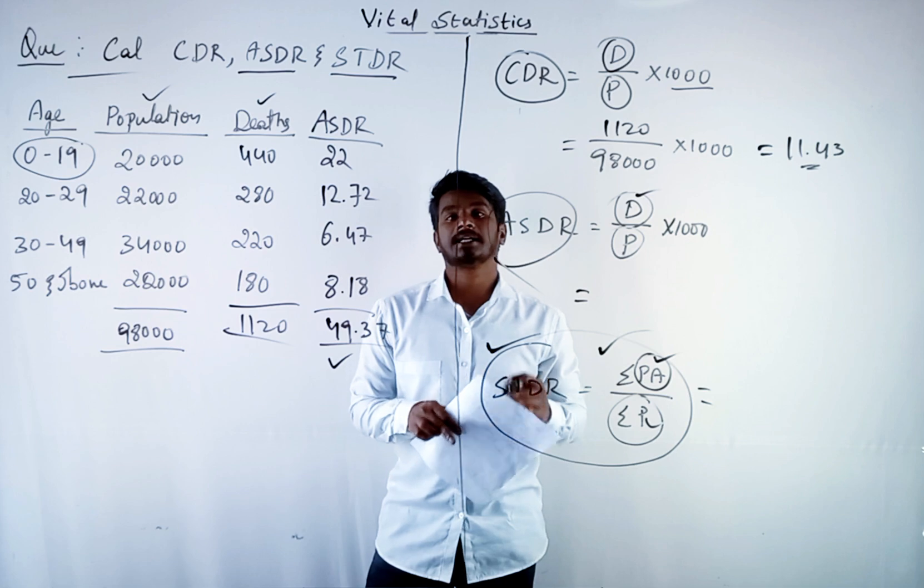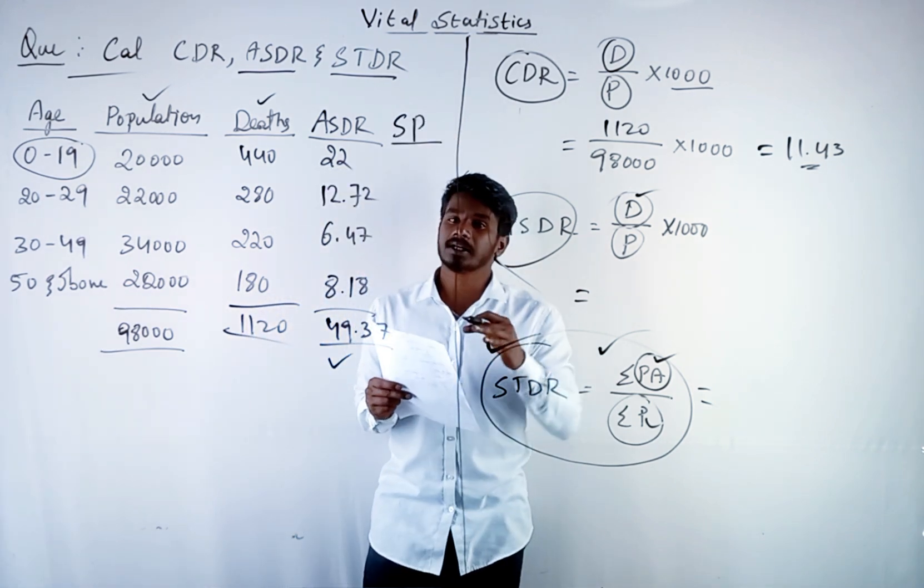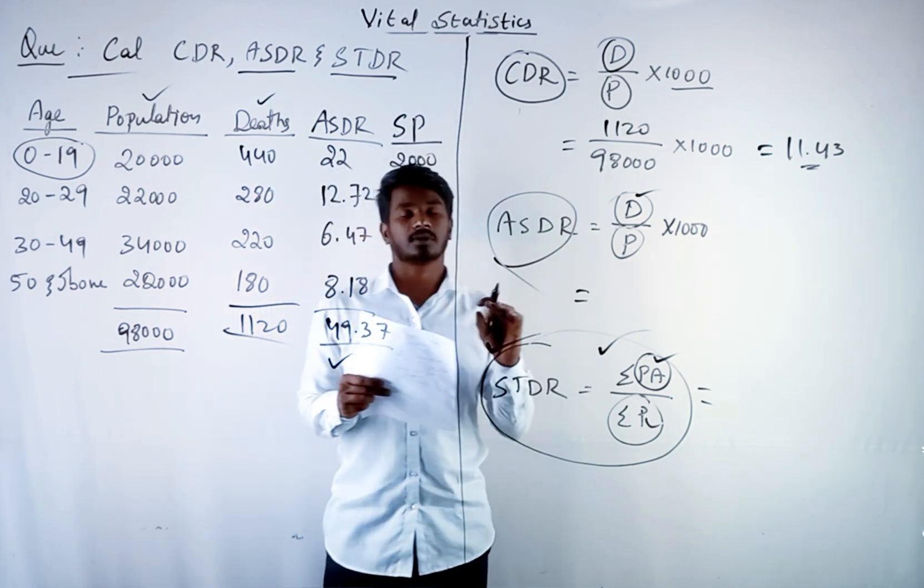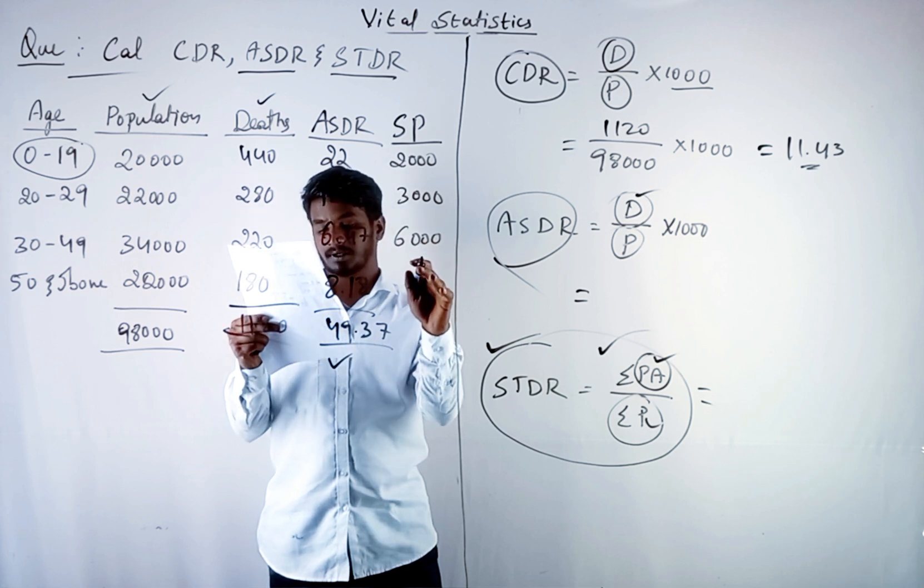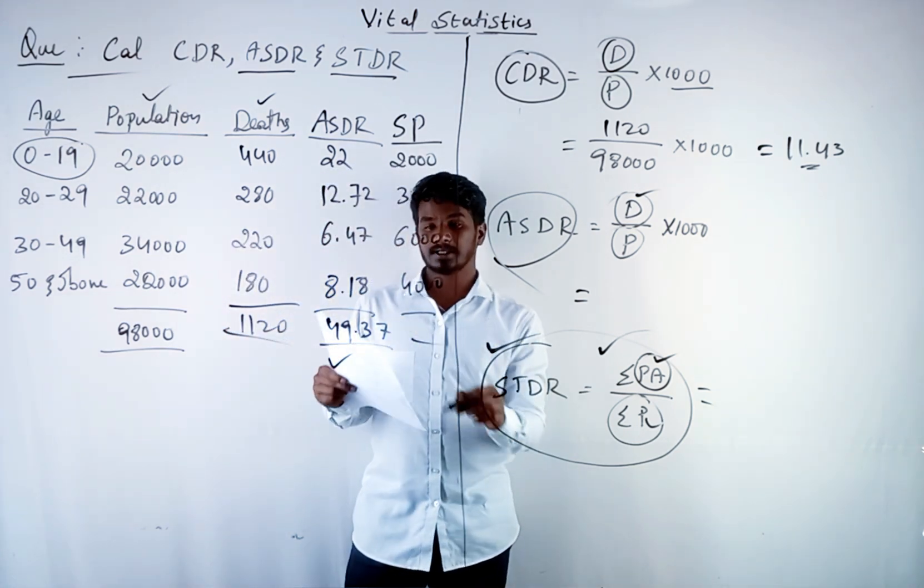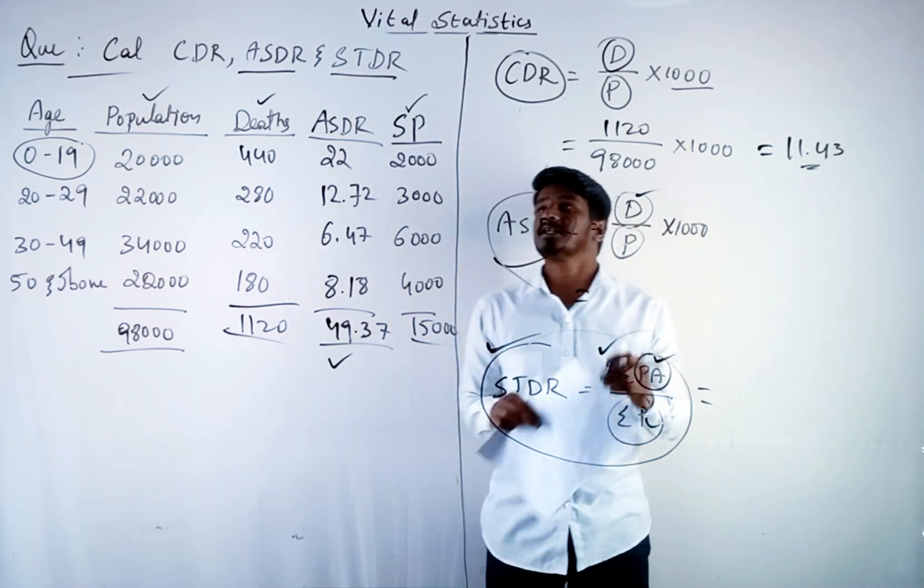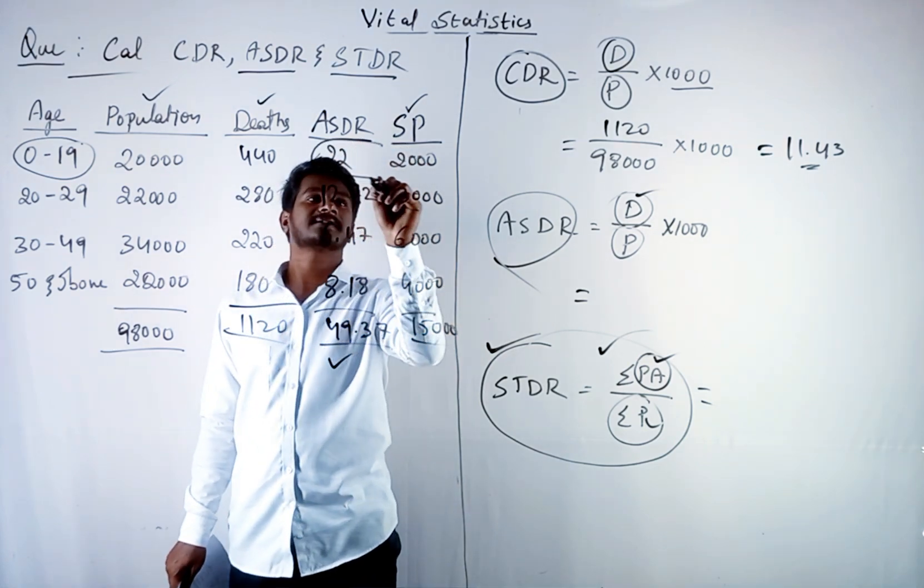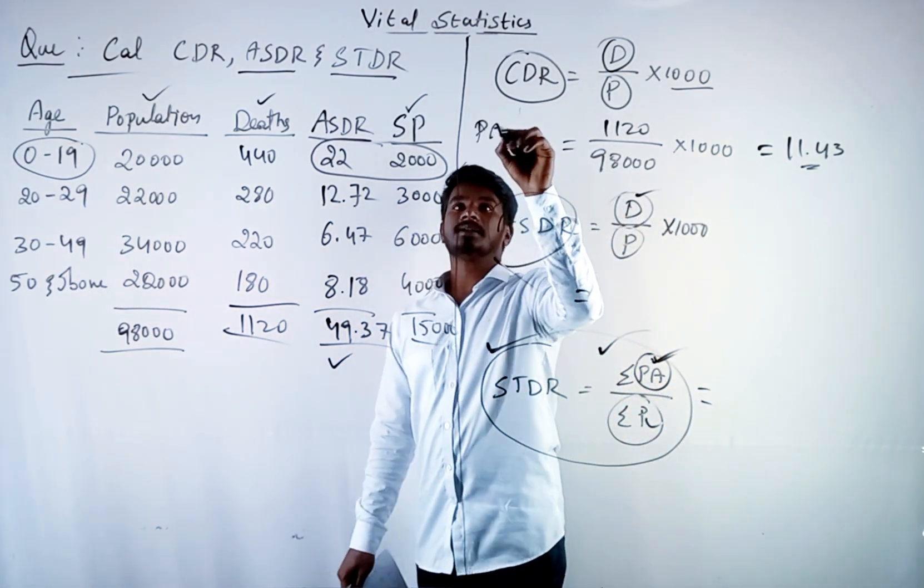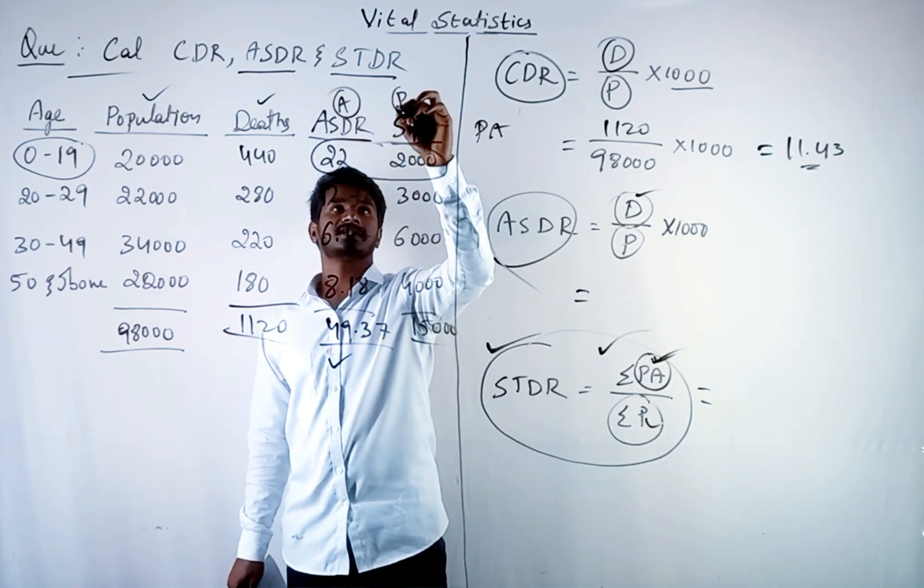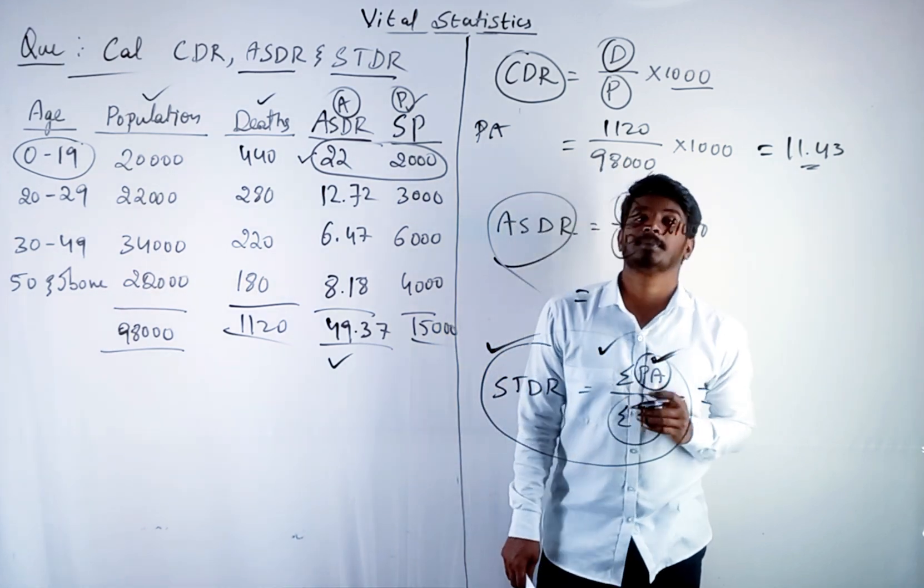To calculate STDR, in the question they will give standard population. Standard population will be given in the question itself. Standard population is 2000, 3000, 6000, and 4000. Total is 15,000. This is your standard population. With that we should multiply ASDR. It will become PA. So PA—we should consider it as A and we should consider it as P. Then we should multiply these both. We will get PA.